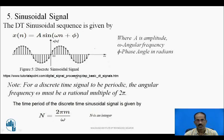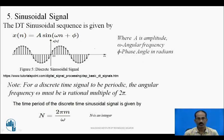Next is the sinusoidal signal. The discrete time sinusoidal sequence is given by x(n) = A·sin(ωn + φ), where A is the amplitude, ω is the angular frequency, and φ is the phase angle in radians. For a discrete time signal to be periodic, the angular frequency ω must be a rational multiple of 2π. The time period is given by N = 2πm/ω, where N is an integer.